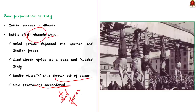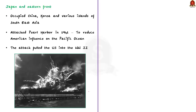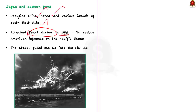On the Eastern Front, Imperial Japan was as brutal as the Germans and was making rapid progress. It occupied China, Korea, and various islands of Southeast Asia, with its next focus on the Pacific Islands. However, the USA had a major presence in the Pacific, so Japan decided to attack Pearl Harbor in 1941. The idea was to cripple America's Pacific fleet to eliminate opposition to Japan's offensive in the Pacific Ocean. Due to the Pearl Harbor attack, the USA declared war on Japan and later on Germany.